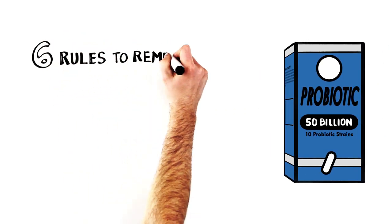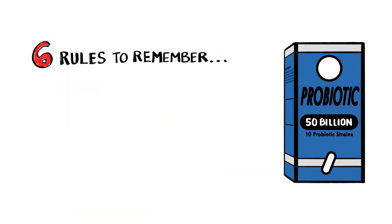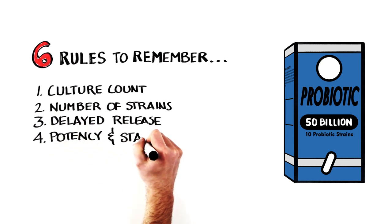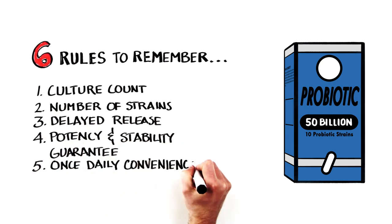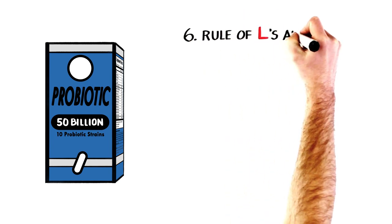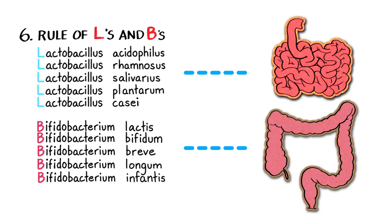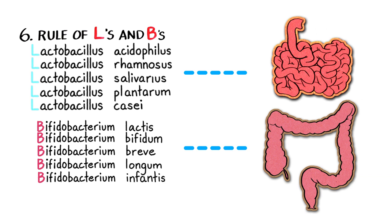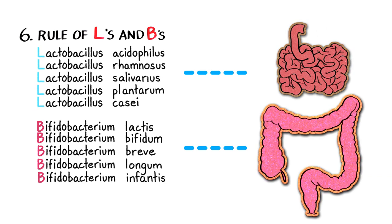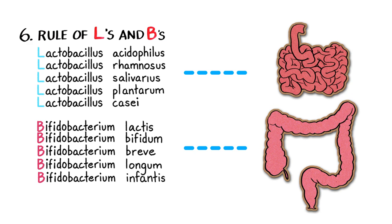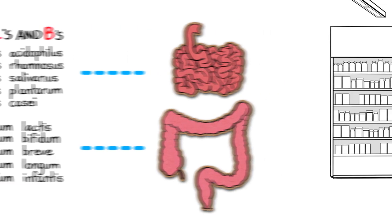Remember, there are just six rules to consider when choosing a probiotic. High culture count or high potency. Number of strains. Delayed release. Potency and stability guarantee. Once daily convenience. The rule of L's and B's. To improve the health of your small intestine, focus on probiotics with lactobacillus or lots of L's. If your large intestine needs a recharge, go for probiotics with several strains of bifidobacteria or lots of B's. Best to have lots of both L's and B's.